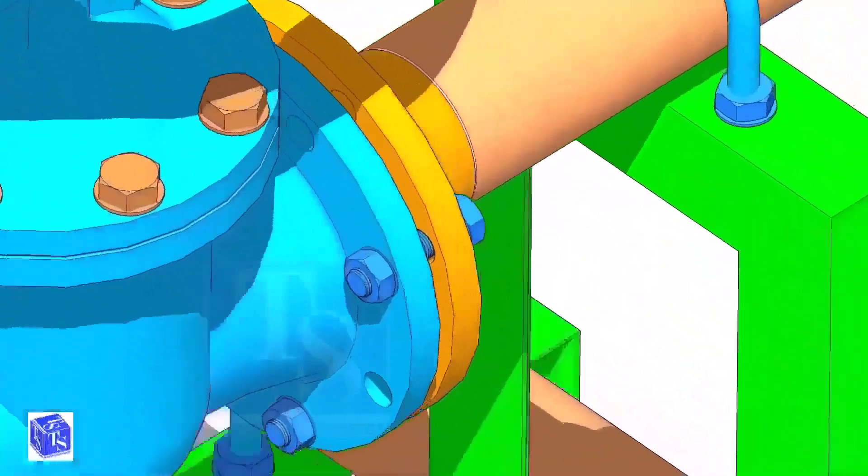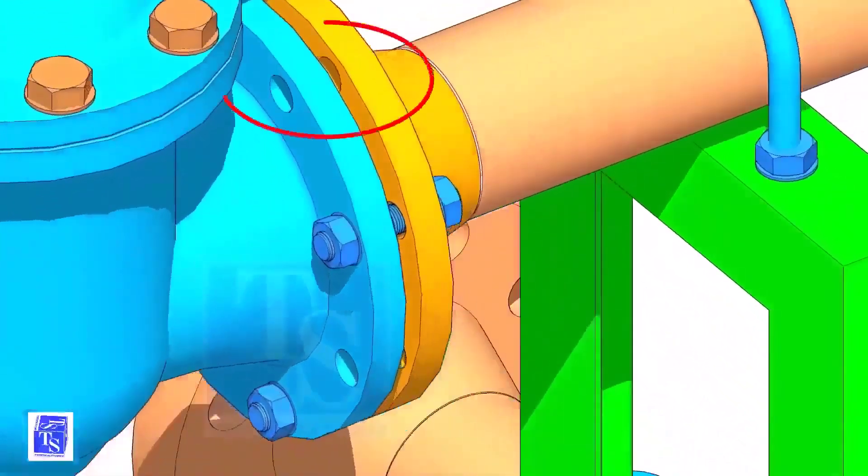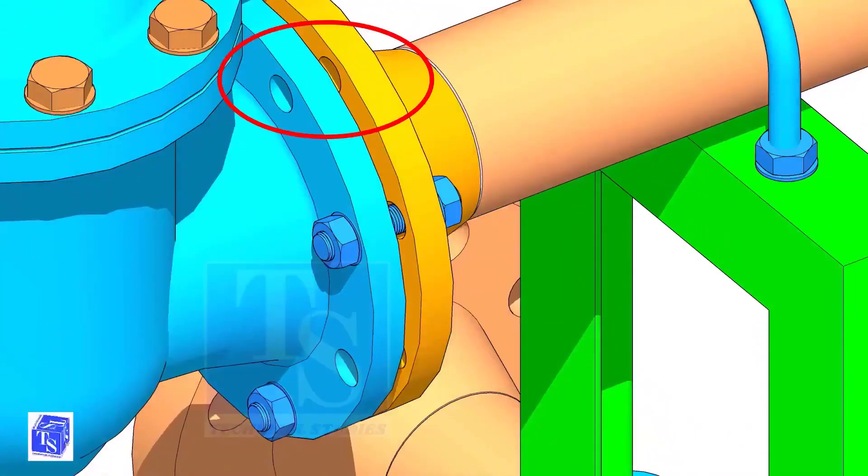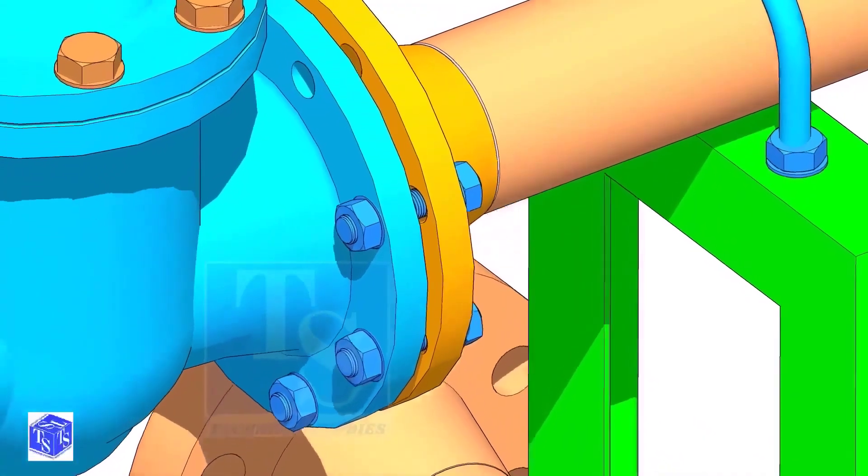Put a bolt on the top side, then on the sides as shown. Leave a hole on the top side to lift and rotate the valve.